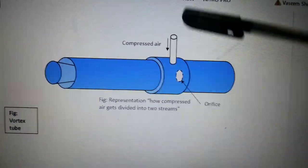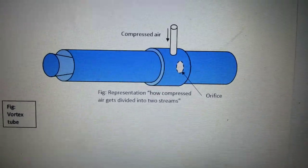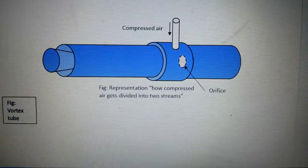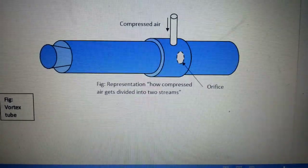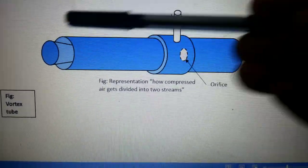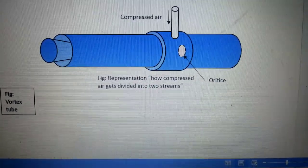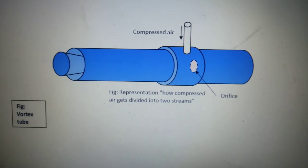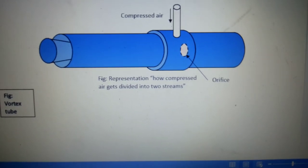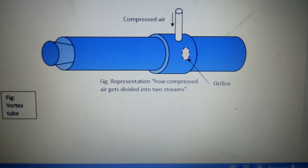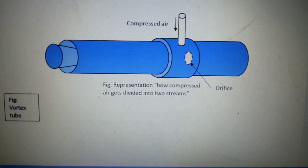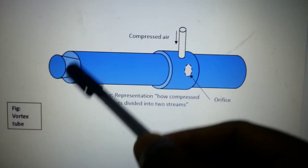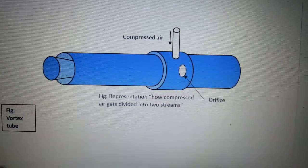The compressed air enters the vortex tube tangentially and on the right hand side you have a diaphragm with orifice. The air which enters has this spinning action, goes down the hot end tube, reaches the left hand side, and the flow is restricted by the throttle wall. The pressure of air near the valve is higher than the inlet pressure, so it is called a high pressure region due to collision.